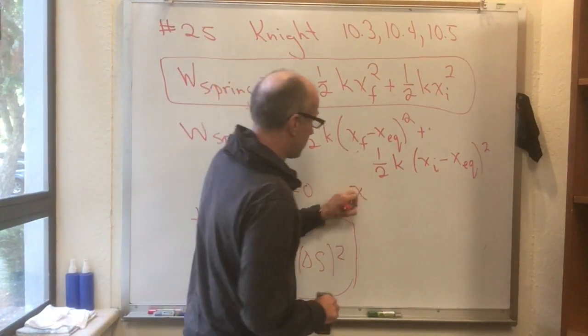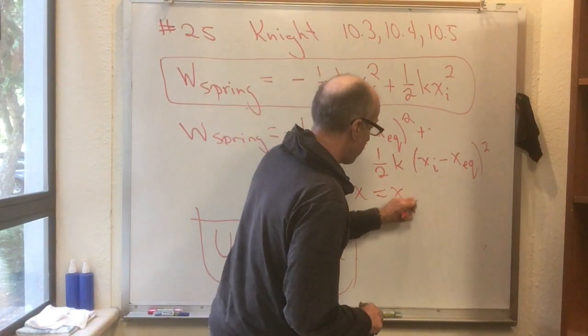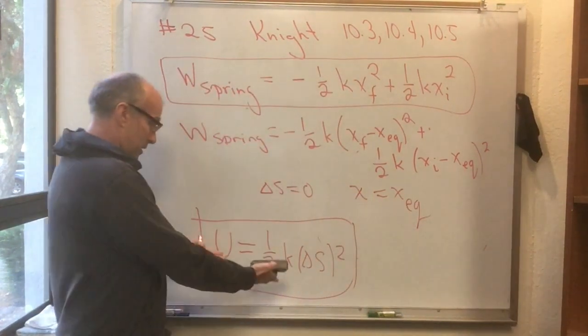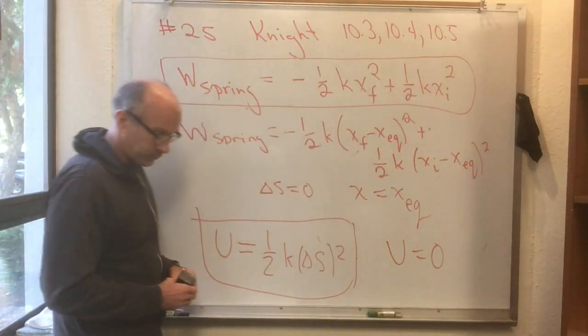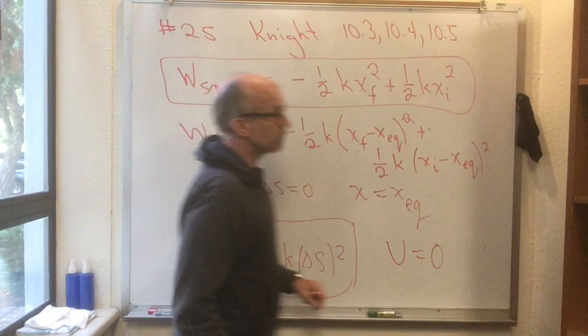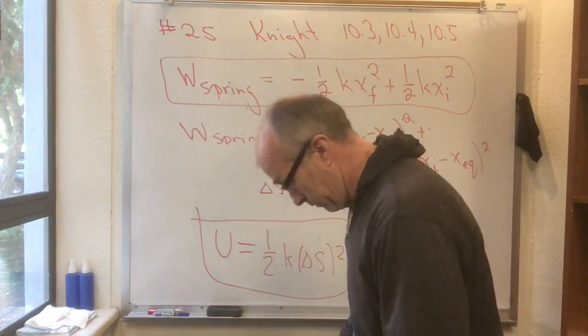The nice thing about not doing that is that if the spring is at delta s equals zero, that is to say, if x is at x equilibrium, then this formula kind of has a nice simple case that in that case u is zero. All right. That's 10-3, really. Pretty easy.